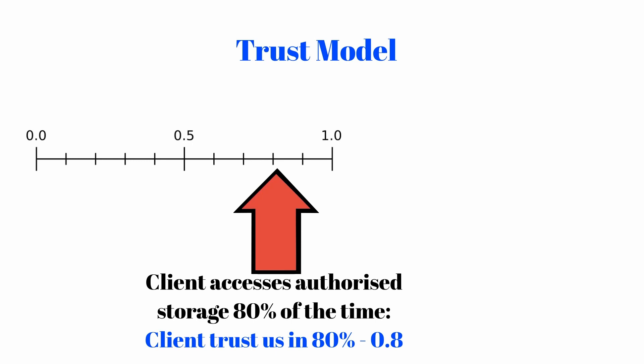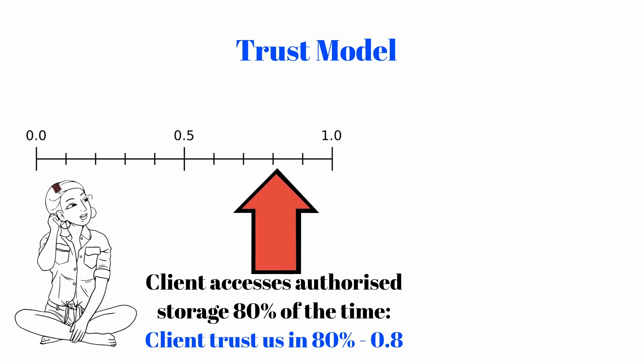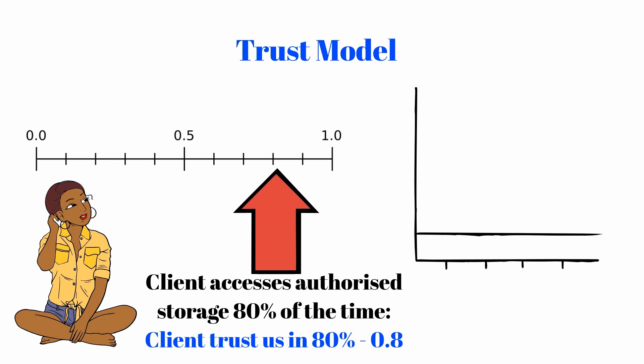The trust model also determines how a measurable metric is mapped to a trust rating. For example, if a client accesses authorized storage more than 80% of the time, it is trusted — trust rating 1 for the binary model, or trust rating equal to the percentage of authorized access, such as trust rating 0.8, for the continuous model.